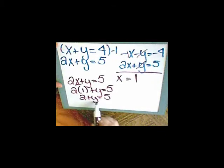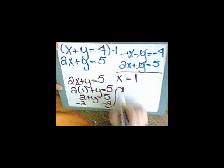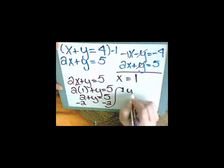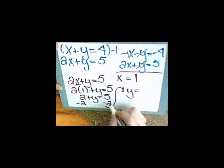Now remember I want to get y by itself. So I'm going to subtract 2 from both sides of the equal sign. And I'm going to write it up here. y equals 5 minus 2 is 3.